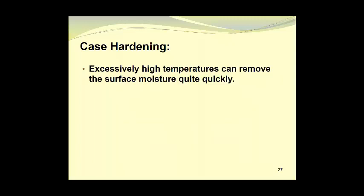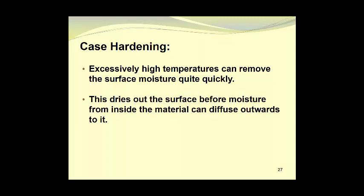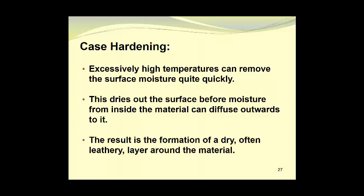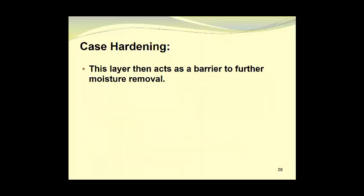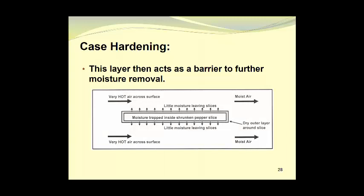Excessively high temperatures can remove the surface moisture quite quickly, which you may think is an advantage. However, this dries out the surface before moisture from the inside of the material can diffuse outwards and reach that surface. The result is the formation of a dry, often leathery layer around the material, and this layer then acts as a barrier to further moisture removal. Here we see how very hot air blowing across the surface of a pepper slice will cause the pepper slice to shrink and develop a dry outer layer. This dry outer layer prevents moisture from leaving the slice.